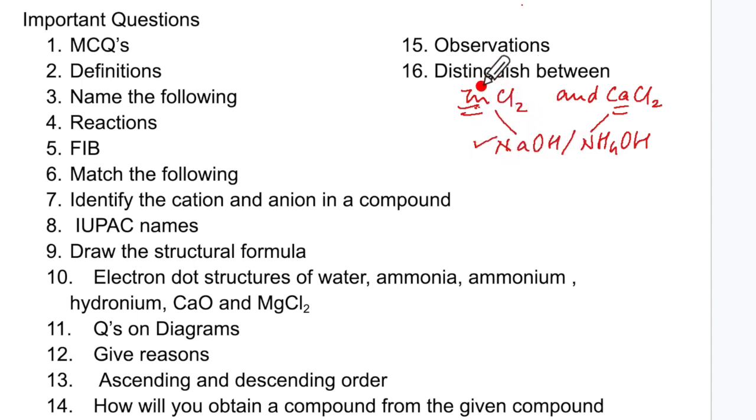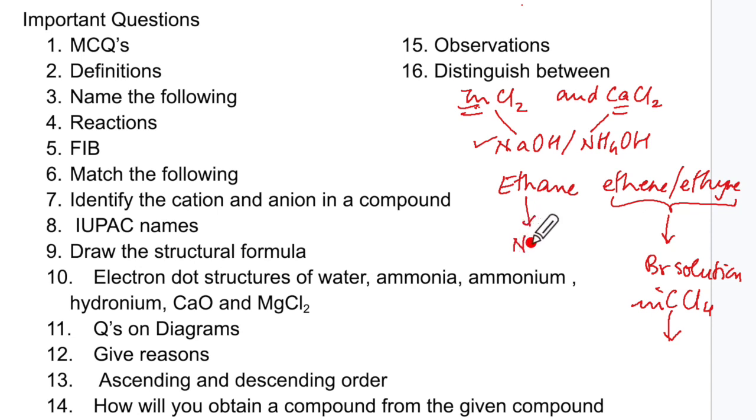Now distinguish between is not just applicable for this but it is also applicable for organic chemistry where they can give you ethane and ethene or even ethyne. So for ethene and ethyne they are unsaturated. So if they are bubbled through the bromine solution in carbon tetrachloride which is the inert solvent, they will have the reddish brown color discharge, whereas ethane will have no change. So you know how to distinguish between these.